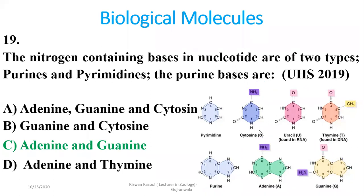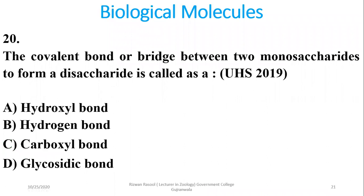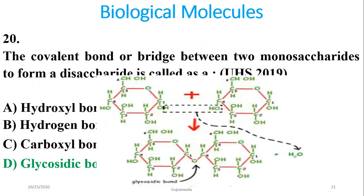You can identify these structures by remembering their functional groups in a single ring or double ring. The covalent bond between two monosaccharides to form a disaccharide is called a glycosidic bond.